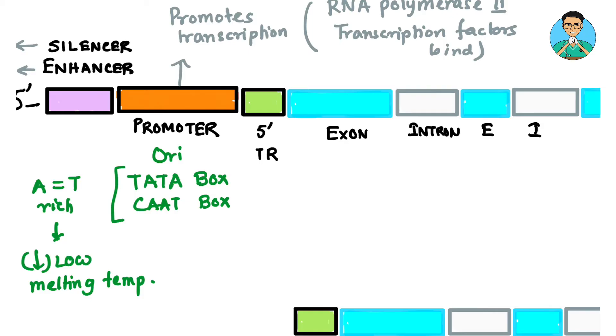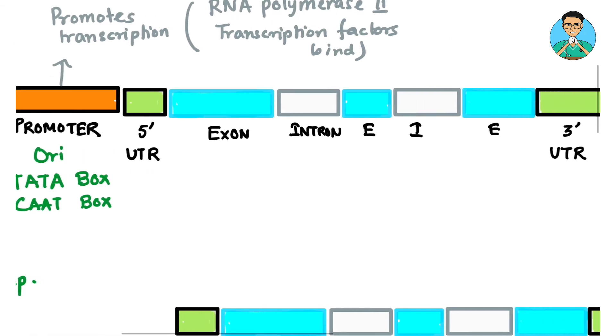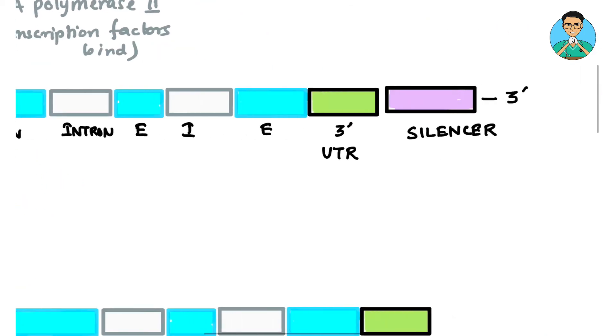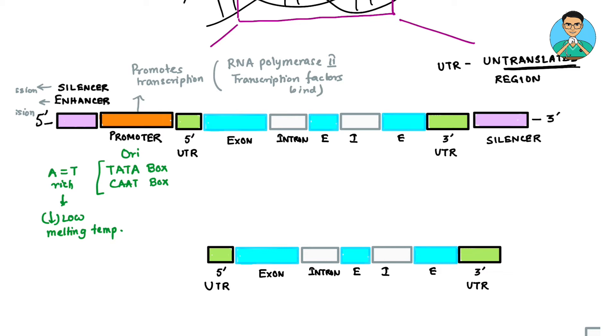Then comes the 5' untranslated region. Then exons and introns. Exons are the expressed part of the gene. Introns are the non-expressed part of the gene. Then we have the 3' untranslated region. So UTR is untranslated, not transcription. So untranslated region. And finally after 3' untranslated region there is a silencer which again decreases the gene expression. So this is at the level of DNA that we have seen.